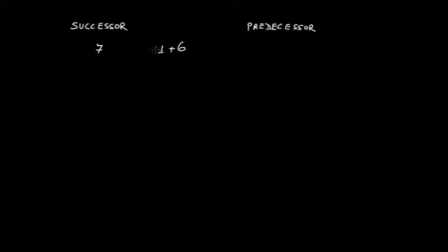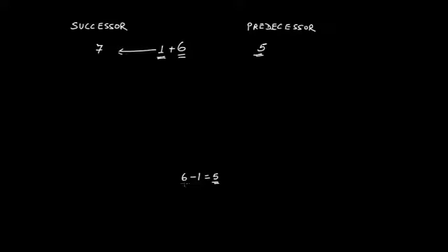You have to subtract one to get the predecessor. If I ask what was the previous number to six, you will say: if I minus one from six, I will get five. Therefore, five would be the predecessor of six. The successor of six is seven because you added one, and the predecessor of six is five because you subtracted one.